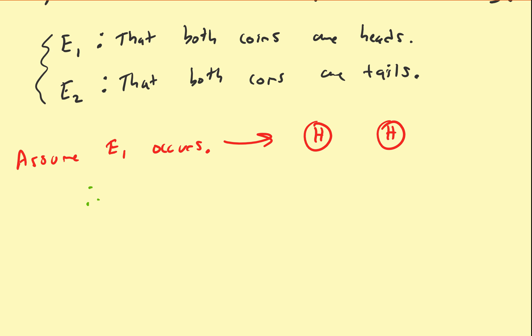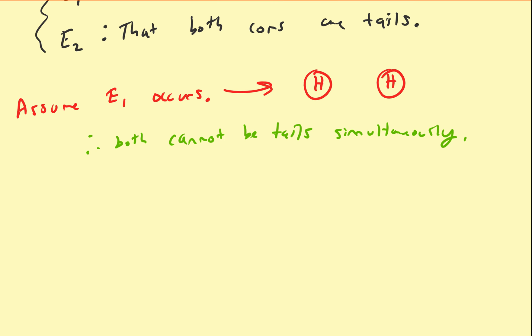And even if I define another event, say E3, such that at least one is a tail, that can't be true either. So both cannot be tails simultaneously. Therefore, E2 cannot occur. That means E1 and E2 are mutually exclusive, or ME.